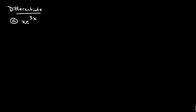In example number four we're going to differentiate six different functions. We'll start with A here. To differentiate this guy, we've got x times e to the 3x. Now what I've got here is two different functions, so I'm going to use the product rule.